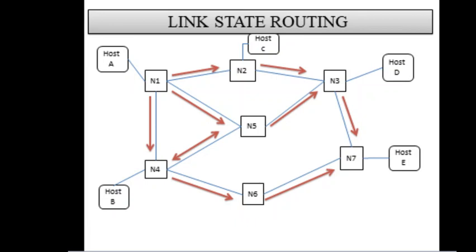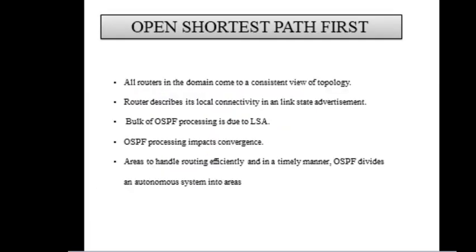This figure explains link state routing. Each node floods its local information to every other node in the network, so each node ends up knowing the entire network topology. In Open Shortest Path First, all the routers in the domain come to a consistent view of the topology. Each router describes its local connectivity in a link state advertisement. The bulk of OSPF processing is due to LSAs, and OSPF processing impacts convergence. OSPF divides an autonomous system into areas to handle routing efficiently and in a timely manner.